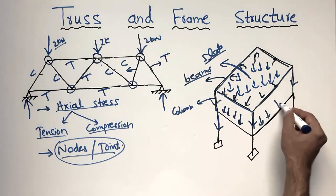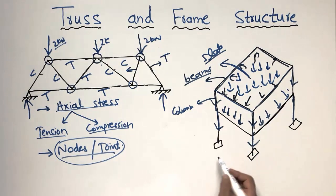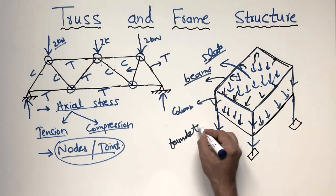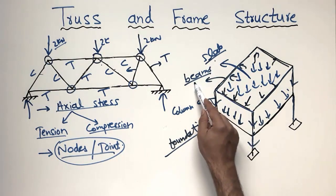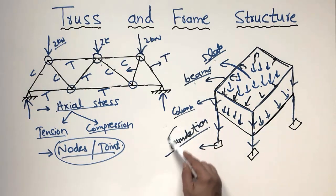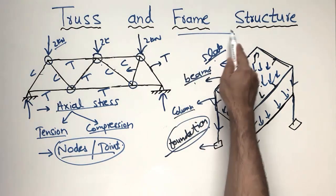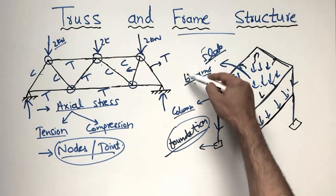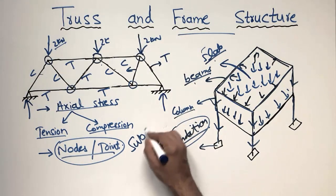In this way your load will be distributed, and ultimately the whole load will be transferred to the foundation or footing. So the frame structure has different members: the slab is a flexure member, the beam is a flexure member, the column is a compressive member, and the foundation is designed for compressive load as well as flexure loads for larger foundations. The frame structure is quite different because it has different loads acting on different members and elements like slab, beam, column, and foundation. Hope you guys understand, and don't forget to subscribe for more engineering videos.